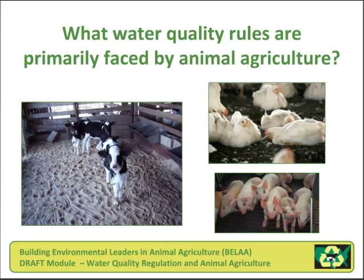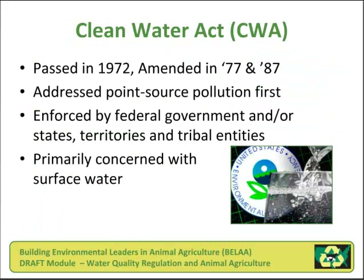What water quality rules are primarily faced by animal agriculture? The Clean Water Act was originally passed in 1972 and was amended in 1977 as well as 1987. The first issue it addressed was point sources of pollution. The Clean Water Act is enforced by the federal government and/or states, territories, and tribal entities. Most states in the United States have delegated authority from EPA to enforce the Clean Water Act within their state boundaries. The Clean Water Act primarily is concerned with surface water.